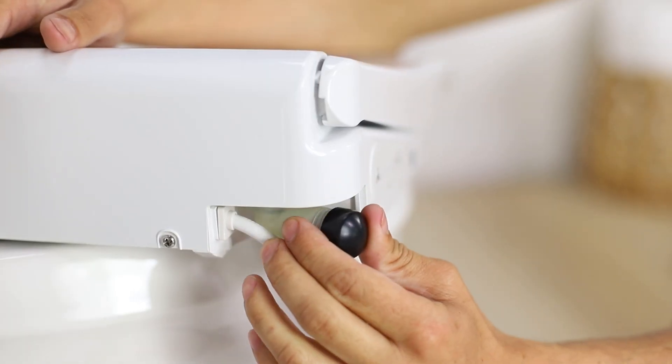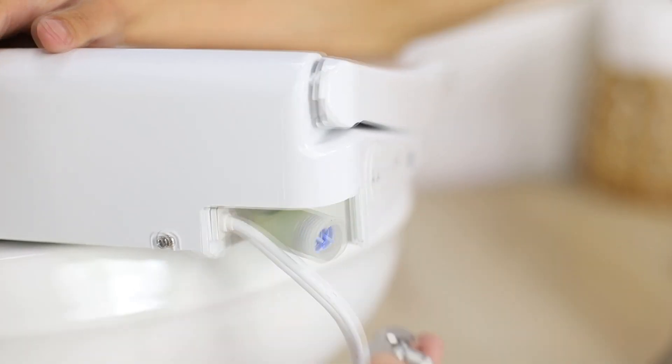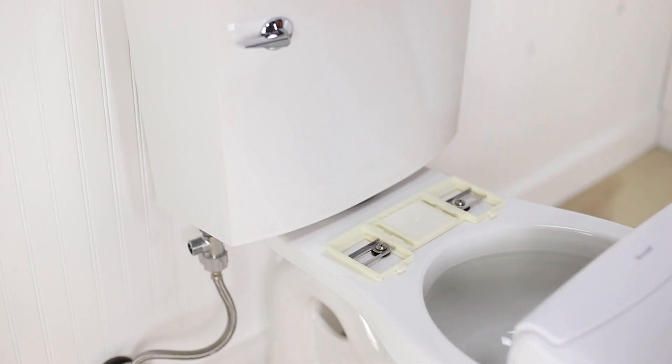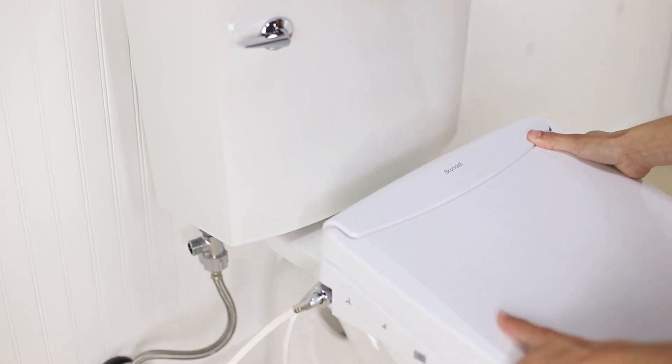Connect the elbow end of the bidet hose to the bidet water inlet and hand tighten to secure. Slide your swash toward the tank onto the mounting plate until it clicks in place.